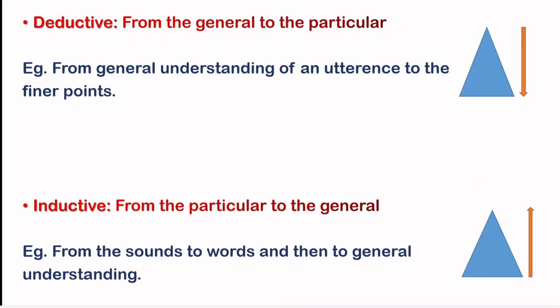And to conclude with a little bit of clarification, so deductive reasoning, we move from the general to the particular. A general understanding to the final points. For example, somebody says, it's going to be cats and dogs today evening.